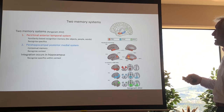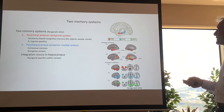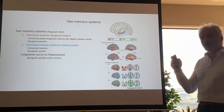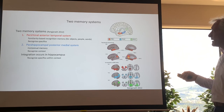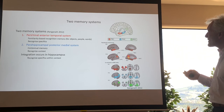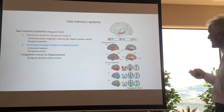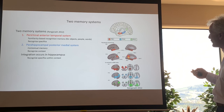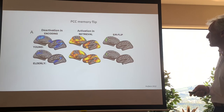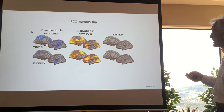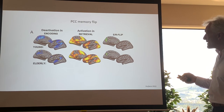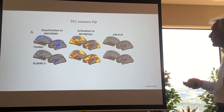The hippocampal formation integrates specifics within a certain context. The anterior perirhinal system recognizes familiar things such as objects, people, and words, and recognizes specific aspects — one specific face or instance. The parahippocampal posterior system recognizes contextual memory and the context itself. The anterior and posterior networks are linked to the self via the retrosplenial cortex, which has a flip-flop mechanism allowing both encoding information into memory and retrieving information from memory.